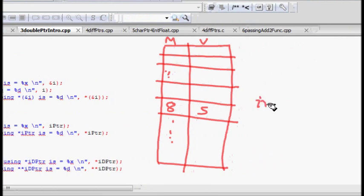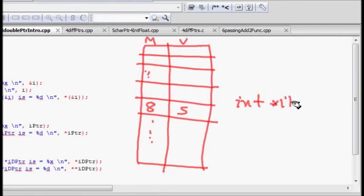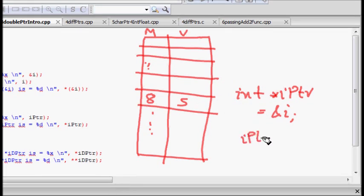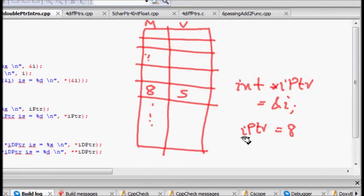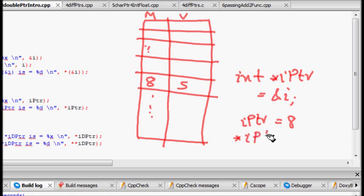If I define something like int star iptr, integer pointer to an integer is equal to ampersand i, it means this variable iptr is a variable, special variable that stores the address of some integer variable. So this iptr will have a value of 8, basically the memory location 8. Now what happens if you ask, in this memory location, what is stored? So just do iptr star iptr and it will give you value 5.